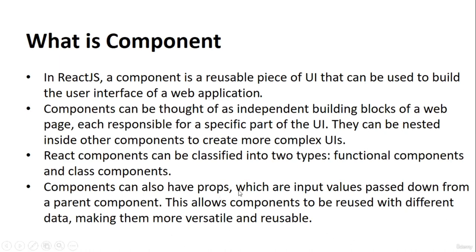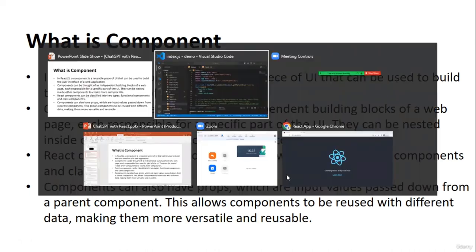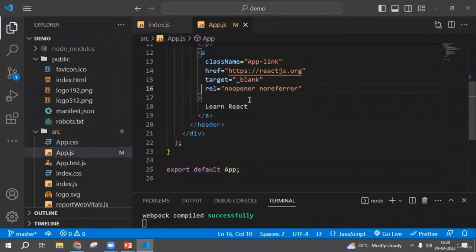A component can be thought of as an independent building block of a web page — it's responsible for a specific part of the UI and can be nested inside other components to create more complex UIs. There are two types of components in React: functional components and class components. The component we're currently seeing is a functional component because we're creating it using a JavaScript function.